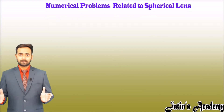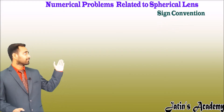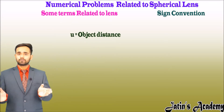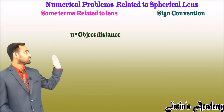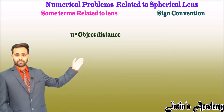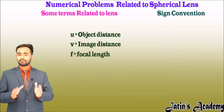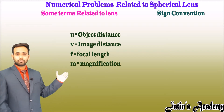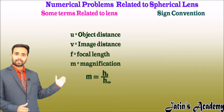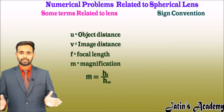In order to understand the numericals, first we should know the formulas and sign conventions related to the lens. The first term is u, similar to the mirror case — u is the object position from the optical center. v is the image position, f is the focal length of a lens (either concave or convex), and magnification is the height of the image (h_i) upon the height of the object (h_naught).